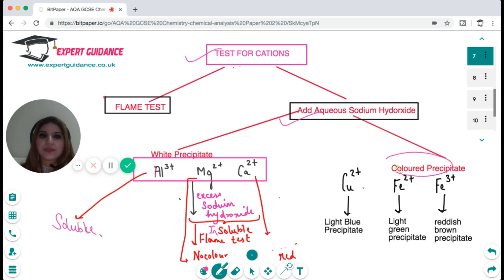You should remember these ions and their precipitates. Light blue is the precipitate for Cu2+ ion, light green is for iron 2+, and reddish brown is for iron 3+.